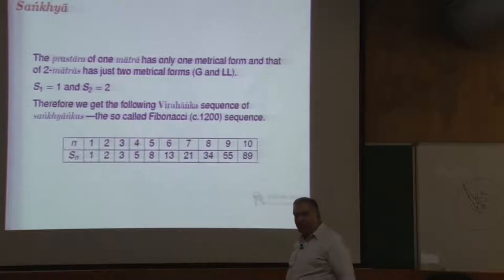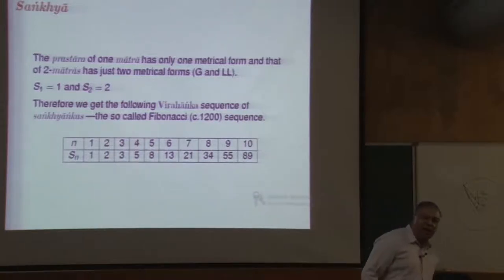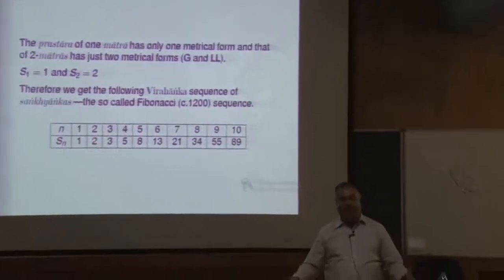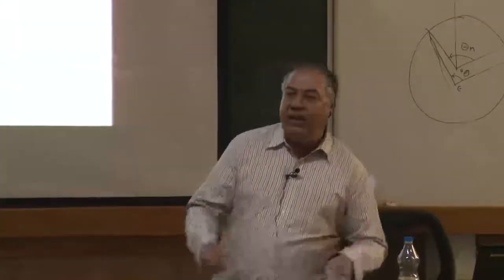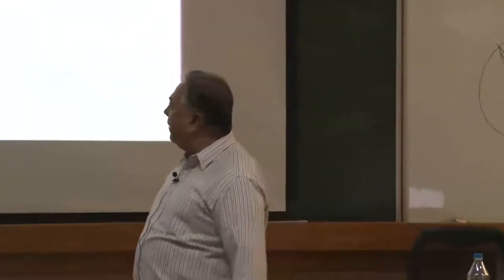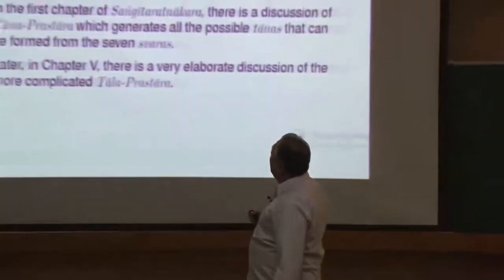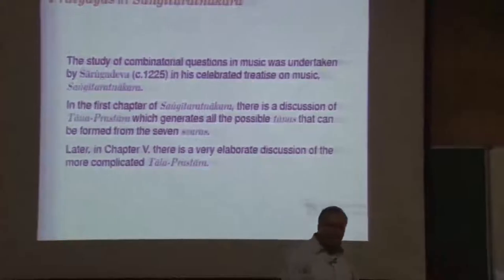What is done in music is indeed a more complex generalization of this. The Matra Vrita is a preliminary version of rhythmic patterns — in music the total time taken is fixed and you have different kinds of rhythmic patterns or talas. In music another thing also occurs: you have a musical phrase and you can permute it in various possible ways — this is called Tana Prasthara, the set of all permutations of seven ordered objects (sa ri ga ma pa dha ni). These were the two problems addressed by Sangadeva in his Sangeeta Ratnakara.